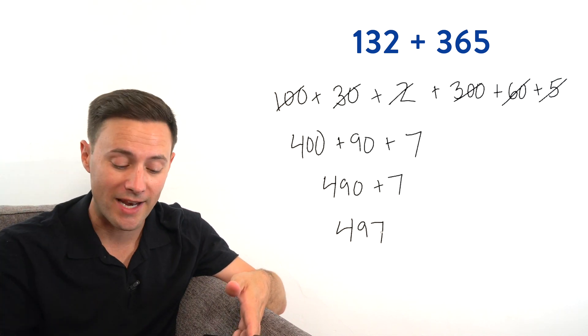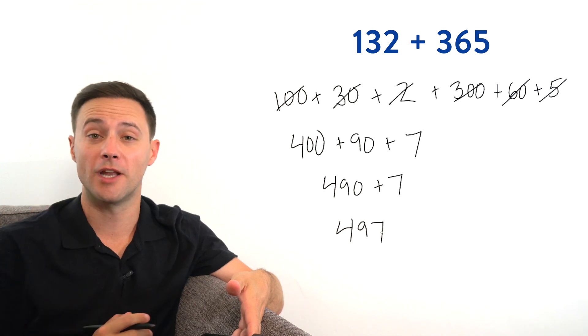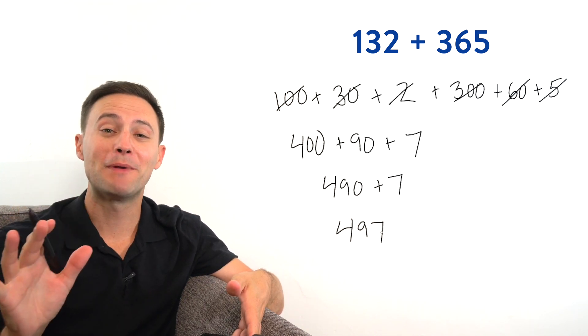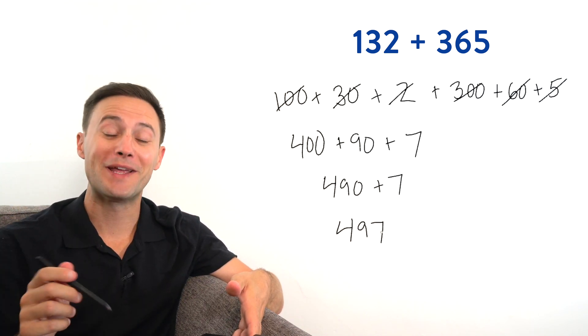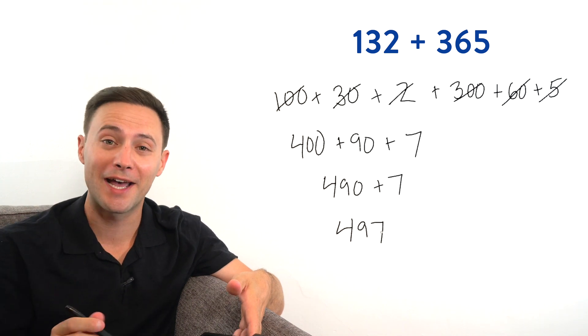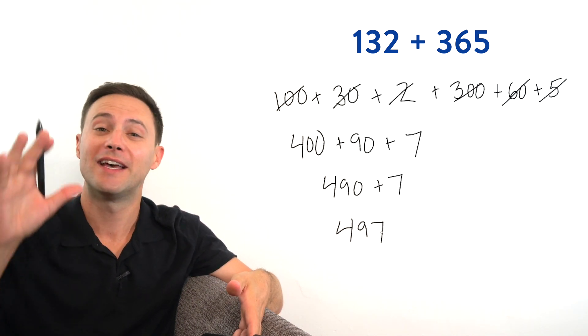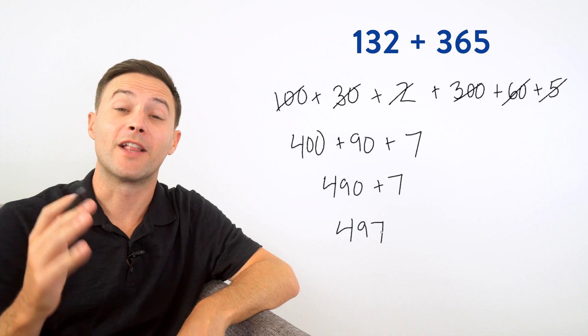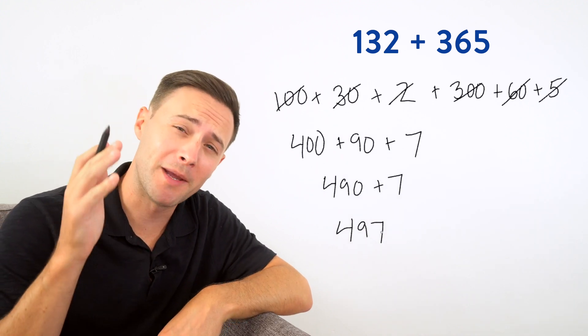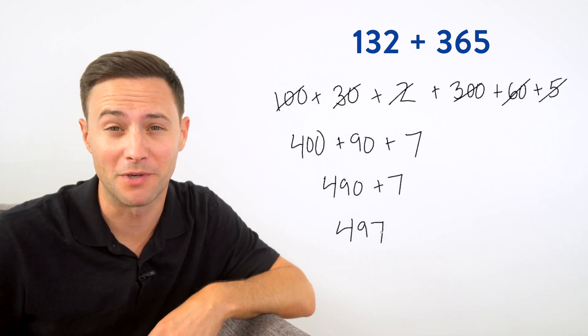Well, we just added two three digit numbers. You might be thinking to yourself, do we have to do that each time? And the answer luckily is no, we don't. Now let's go back to example one and learn a more efficient way to add multi digit numbers.